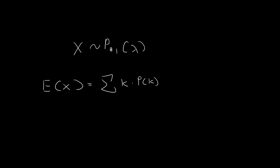Now for the random variable x, which follows the Poisson distribution, k can range from 0, 1, 2, 3, all the way to infinity — it takes on all these discrete values. So for our case, the summation ranges from k equal to 0 all the way to infinity, taking on discrete values 0, 1, 2, 3, and so on. So now in order to find the expected value, we just need to evaluate this expression.